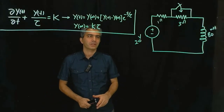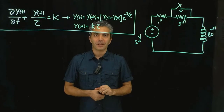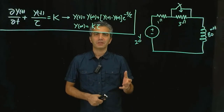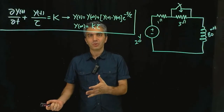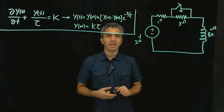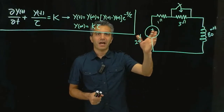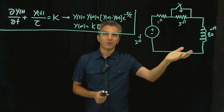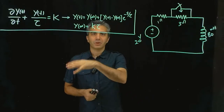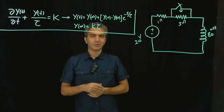Hello everyone. In this lecture I'm going to do the same circuit that we did last time that included an inductor, but this time we're going to use a shortcut — the same kind of shortcut that we use for capacitors — to quickly give you values for the currents and voltages in the circuit without going through the full algorithm.